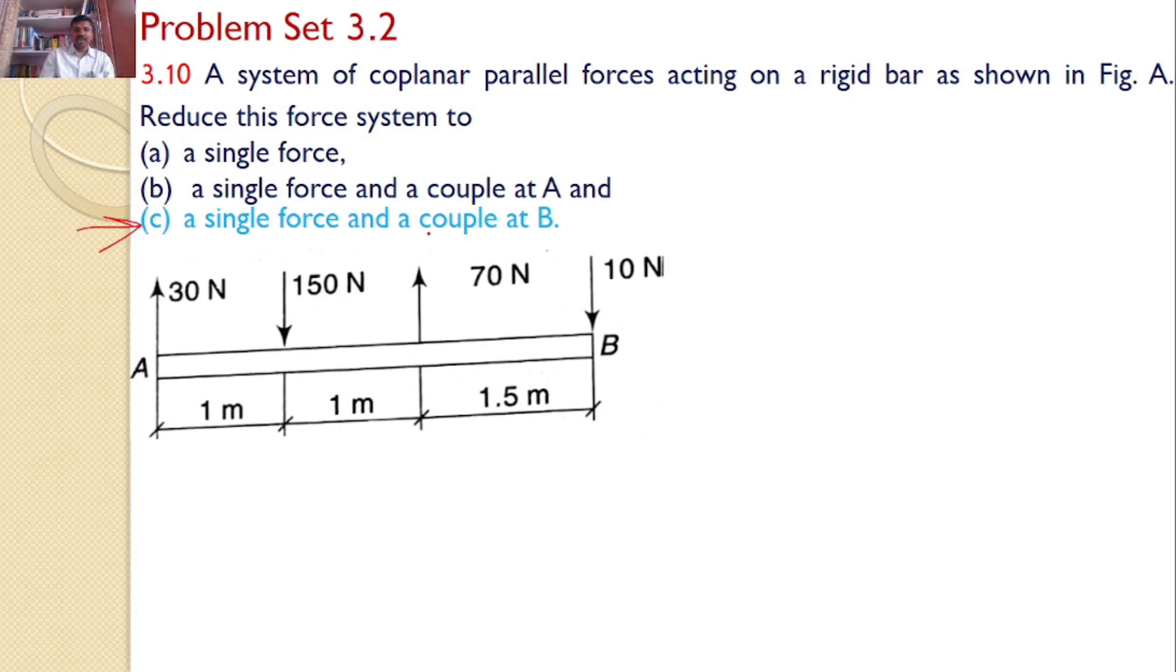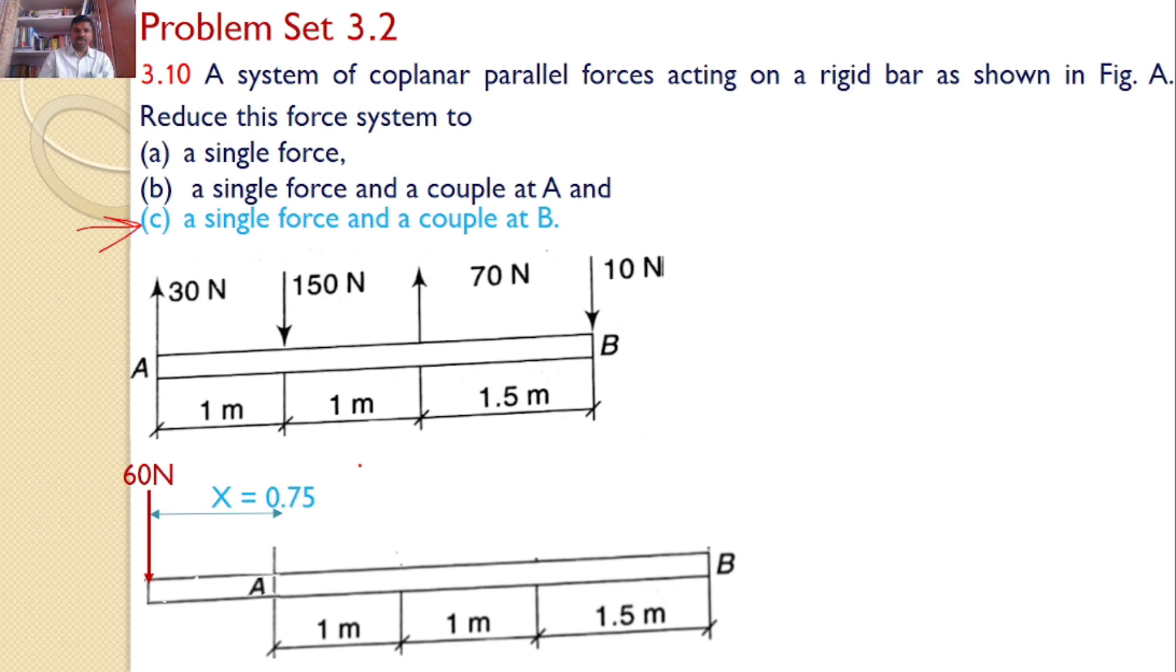I want to replace a single force and a couple at B. So for that, that 60 Newtons at 0.75, this is the equivalent system that we discussed. And this, I want to represent at B with a couple. So just similar to the previous one,